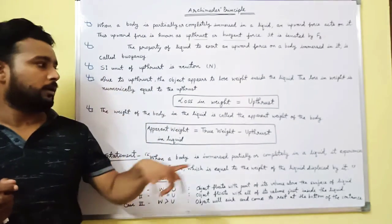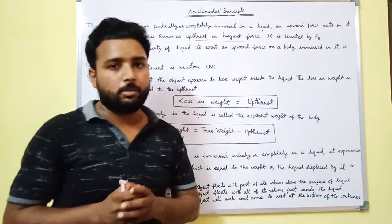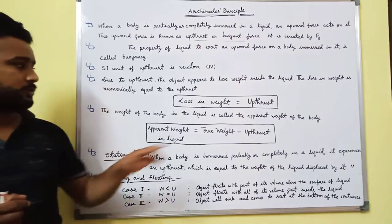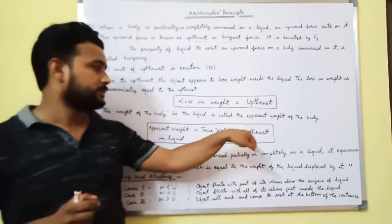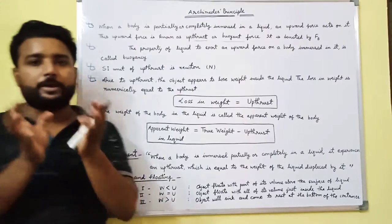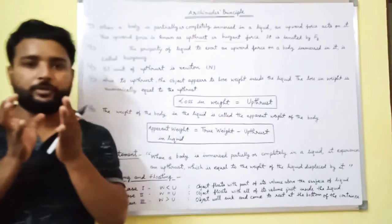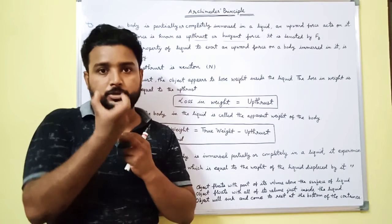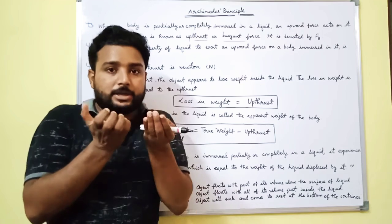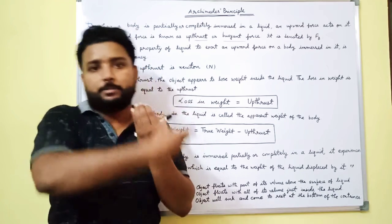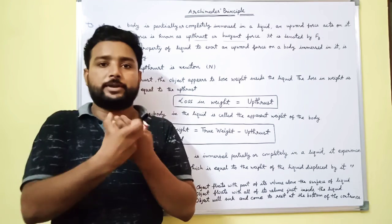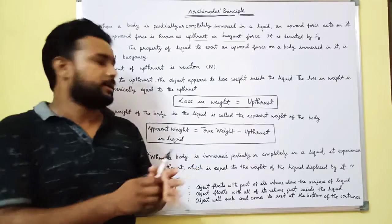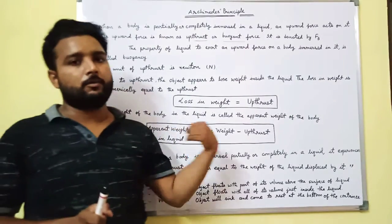Apparent weight in liquid is equal to true weight minus upthrust. The weight measured in air minus the loss in weight due to upthrust gives us the apparent weight of the body in the liquid.